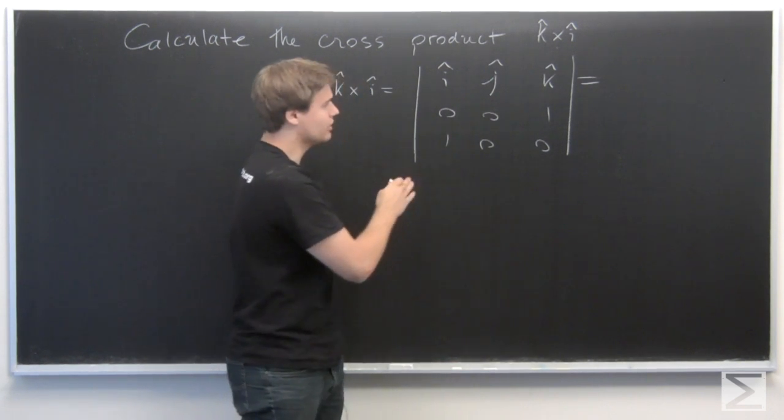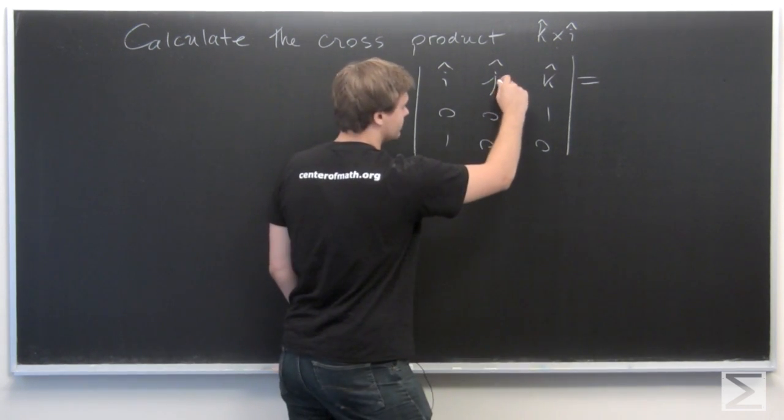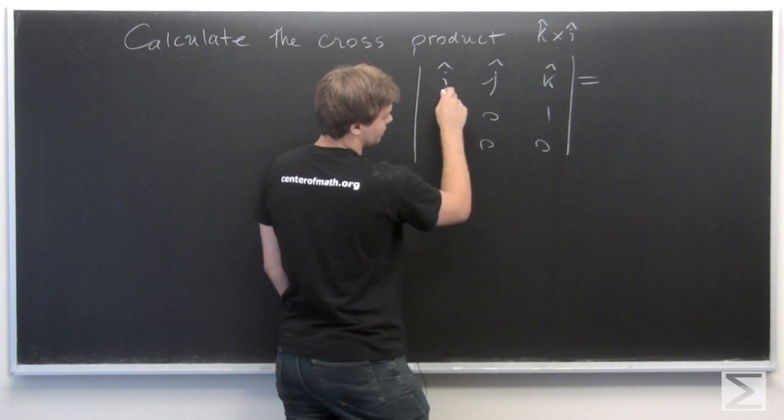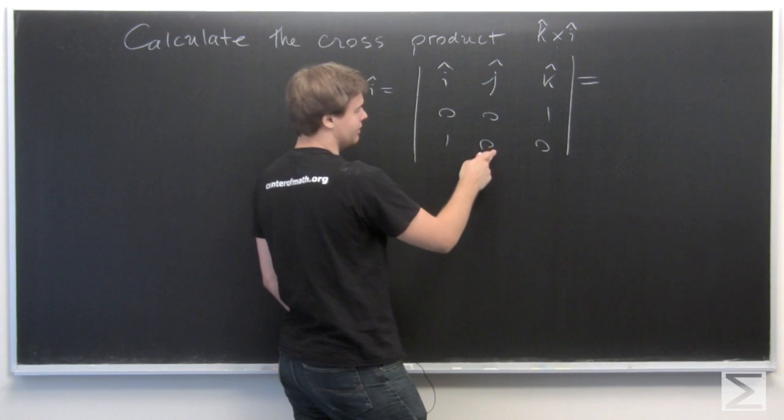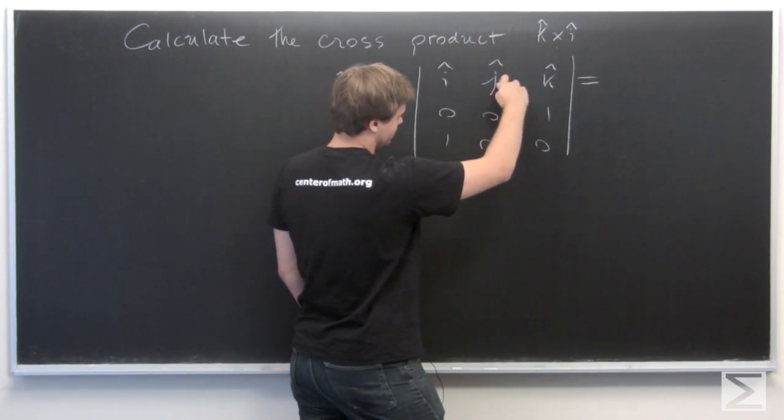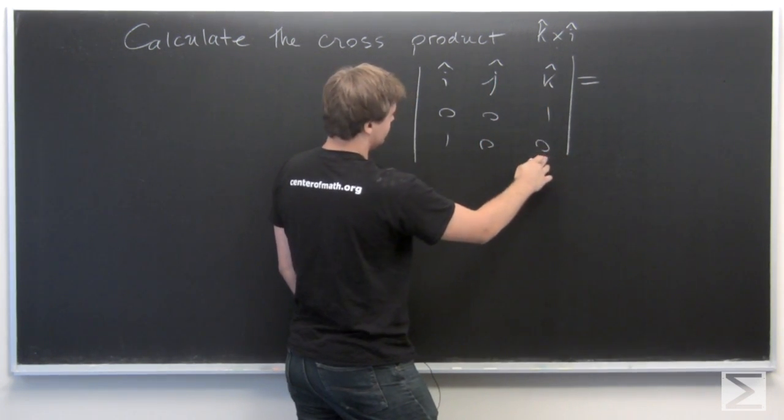We see that the only non-zero term we're going to get here is when we go from the negative j direction. So, now we go i multiplies 0 times 0 minus 0. Likewise, j 1 times 0.